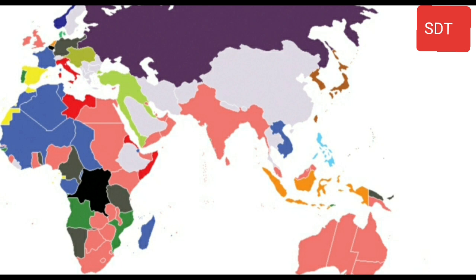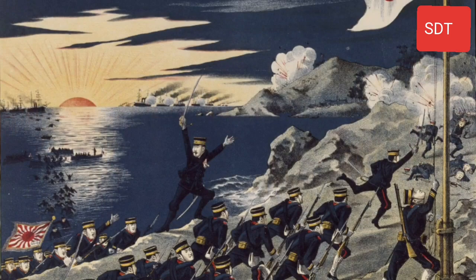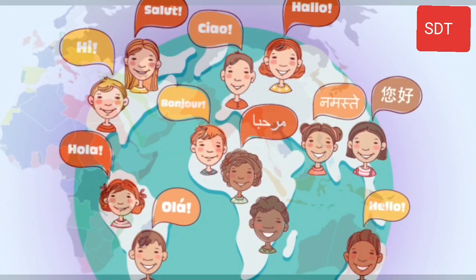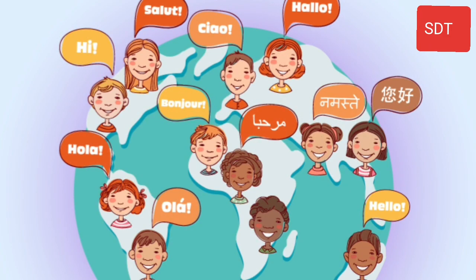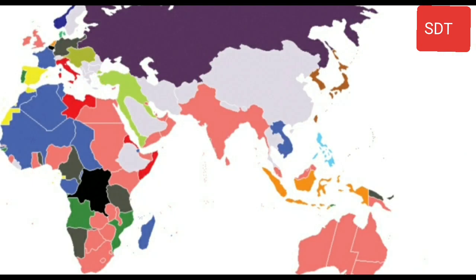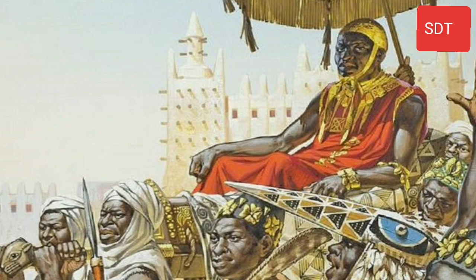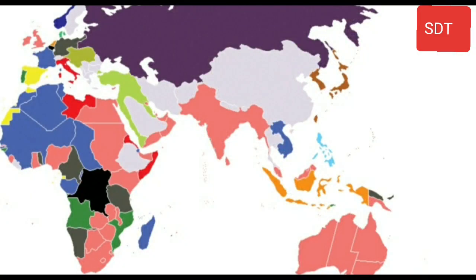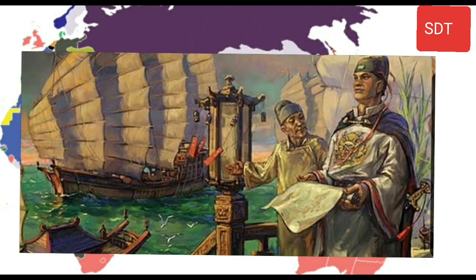In this chapter, we will learn about the difficult situations faced by these colonies and how they began to fight against the domination of European powers. Most of these countries had different kinds of people who spoke many different languages or followed different religions. They did not think of themselves as one nation.